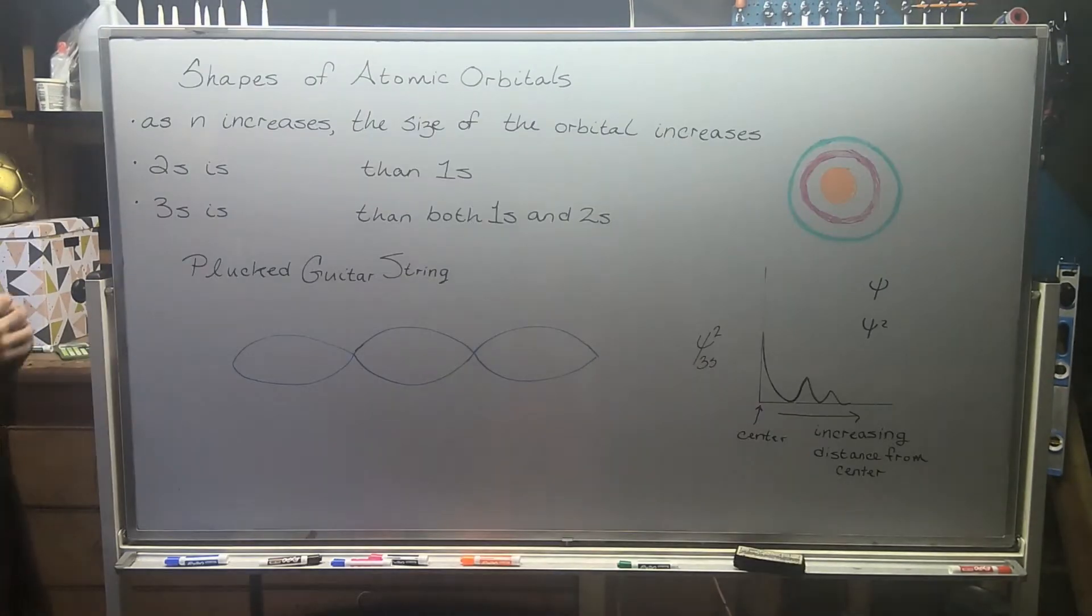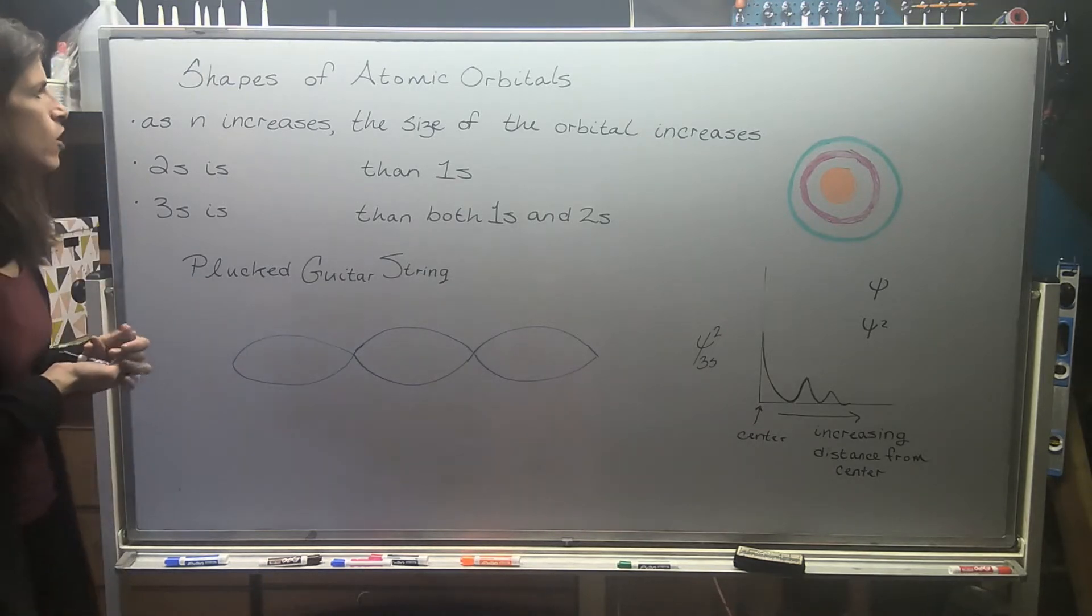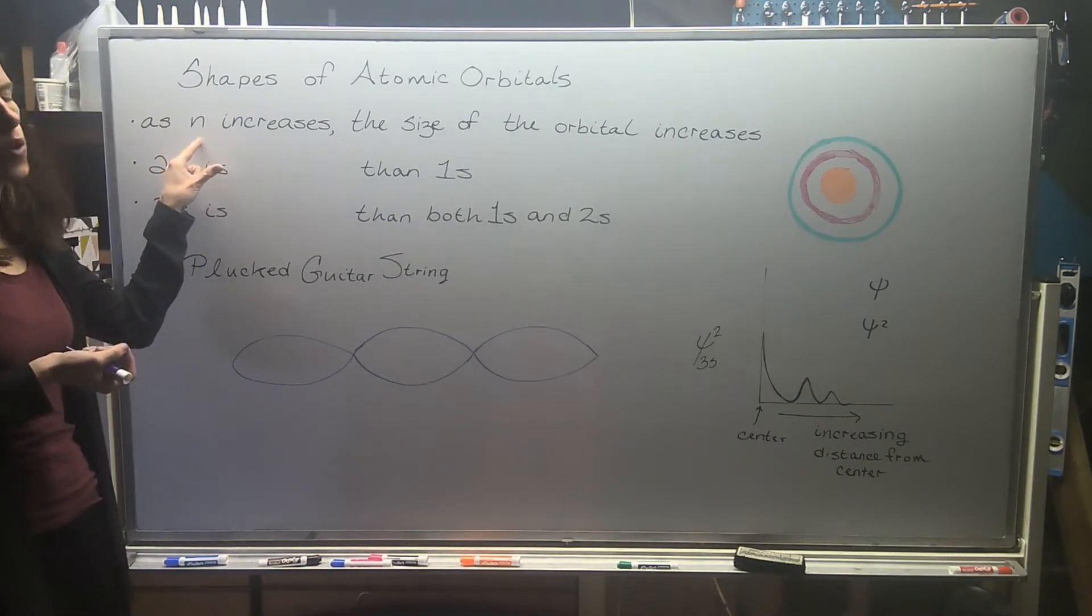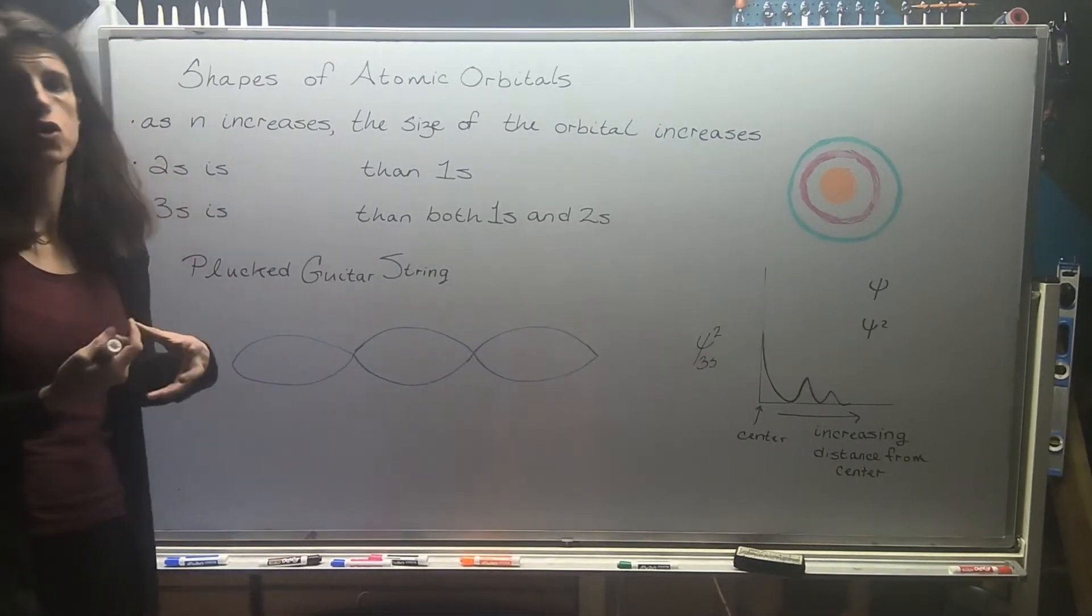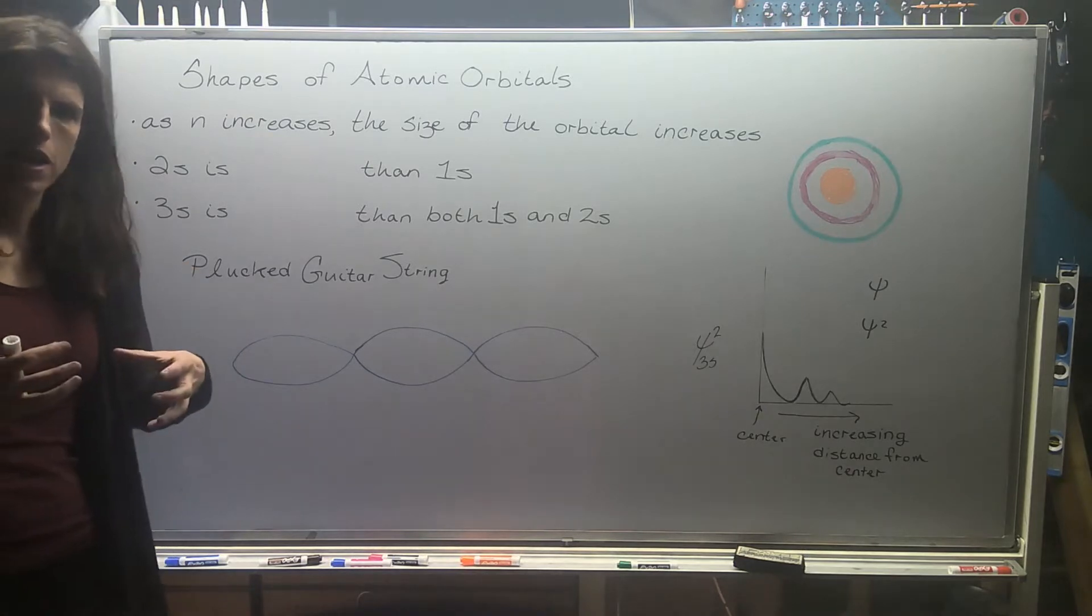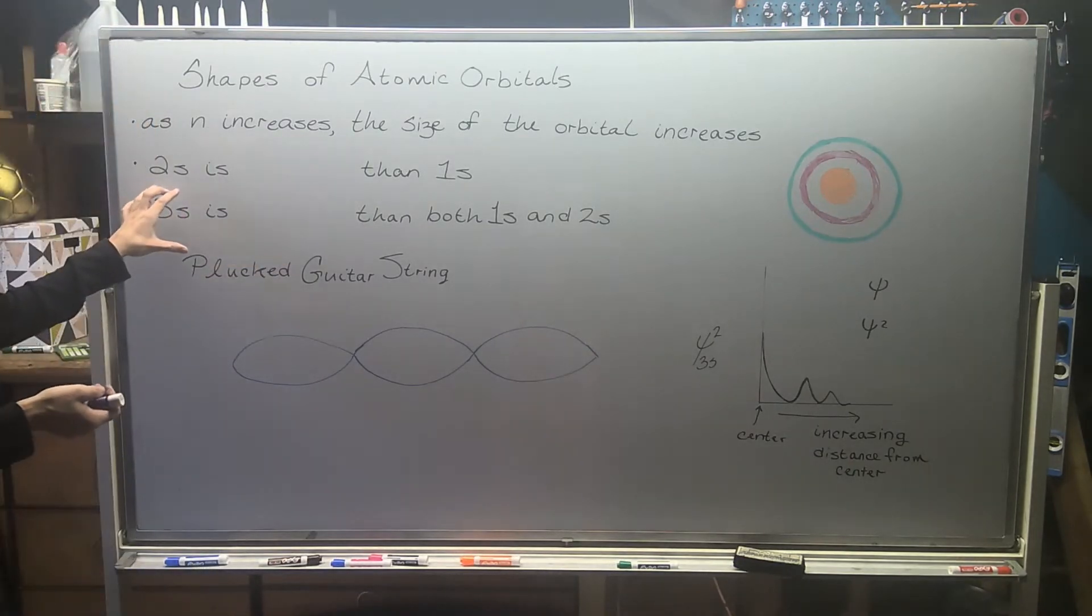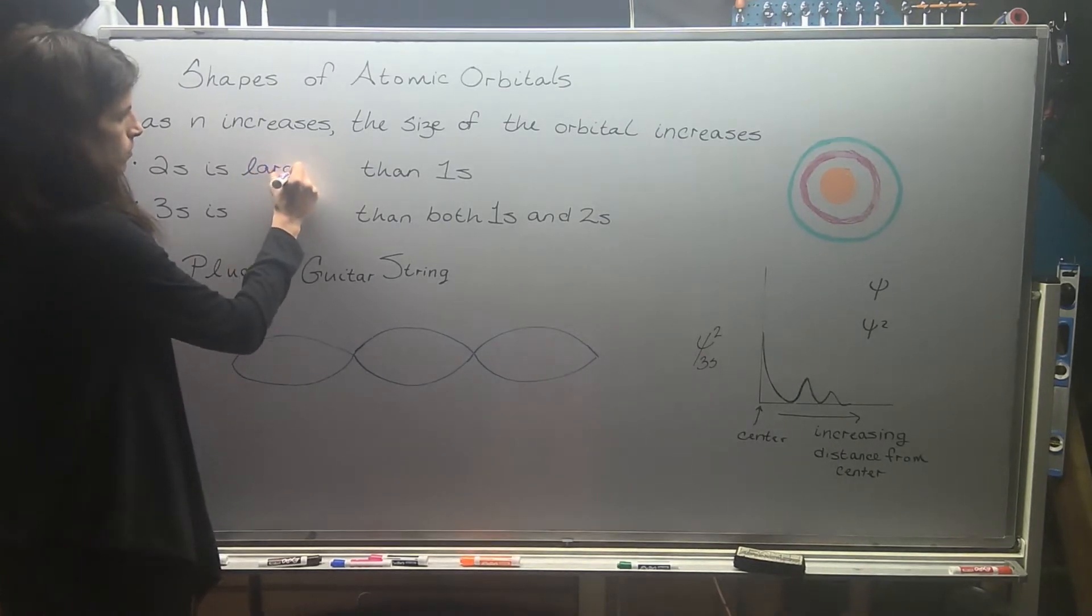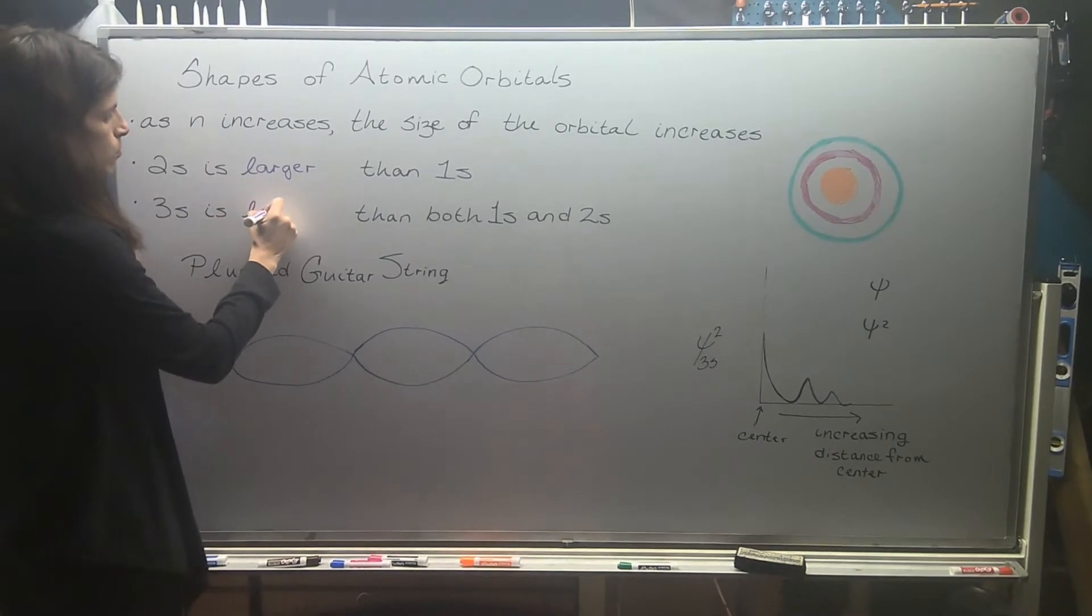When we're talking about these s orbitals, there's lots to know. First off, as our principal quantum number, as n increases, the size of the orbital increases. While talking about s orbitals right now, this also holds true for p and d and f orbitals as well. A bigger n value means that you have a larger orbital. So therefore, 2s is going to be larger than the 1s orbital, and 3s would be larger than both of them.